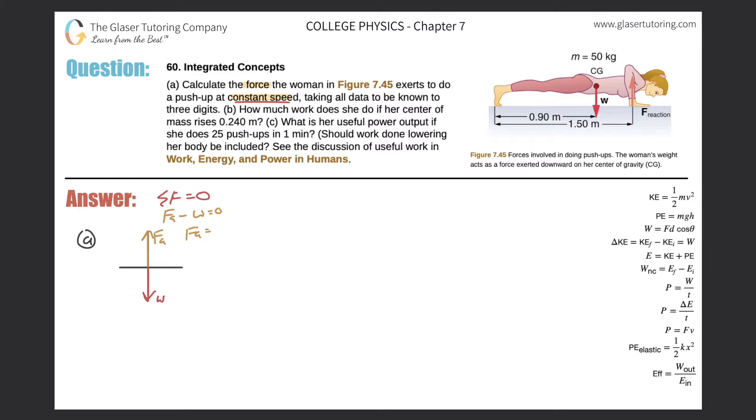That means that FA minus W, because it's pointing down, has to equal zero. And therefore, FA is equal to W. All right, one more time there's the square. So what I'm basically trying to show here is that the force that she's applying will literally be exactly identical to her weight.